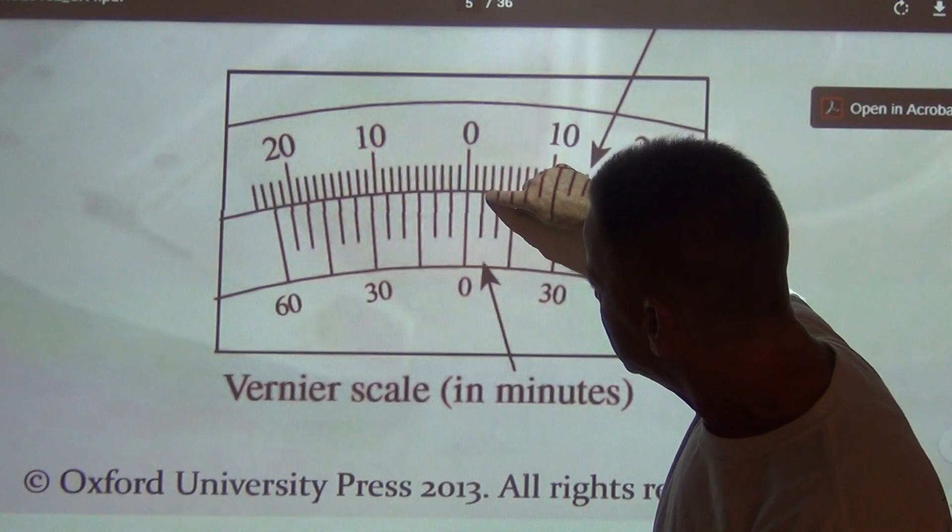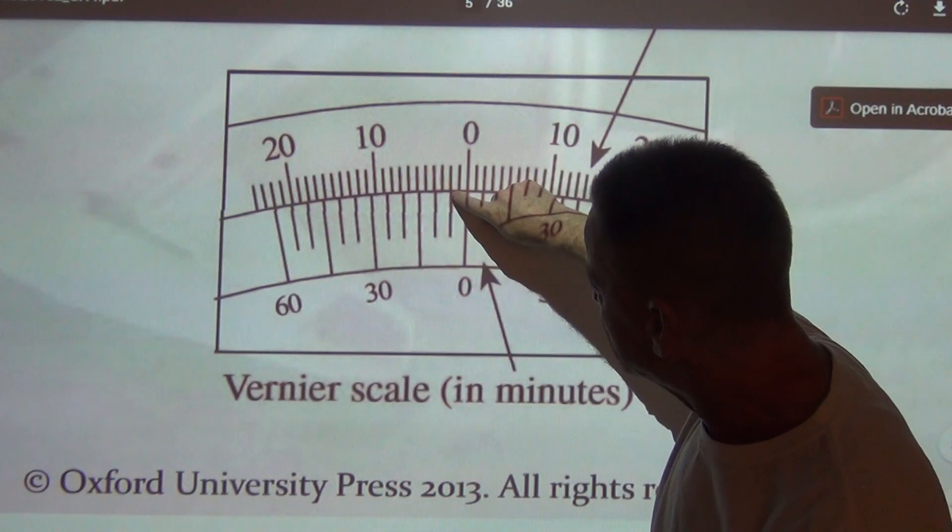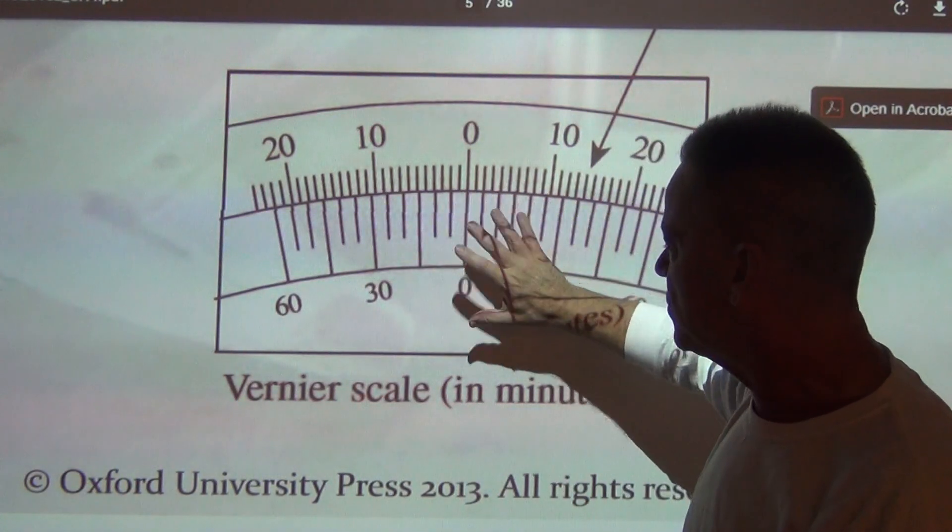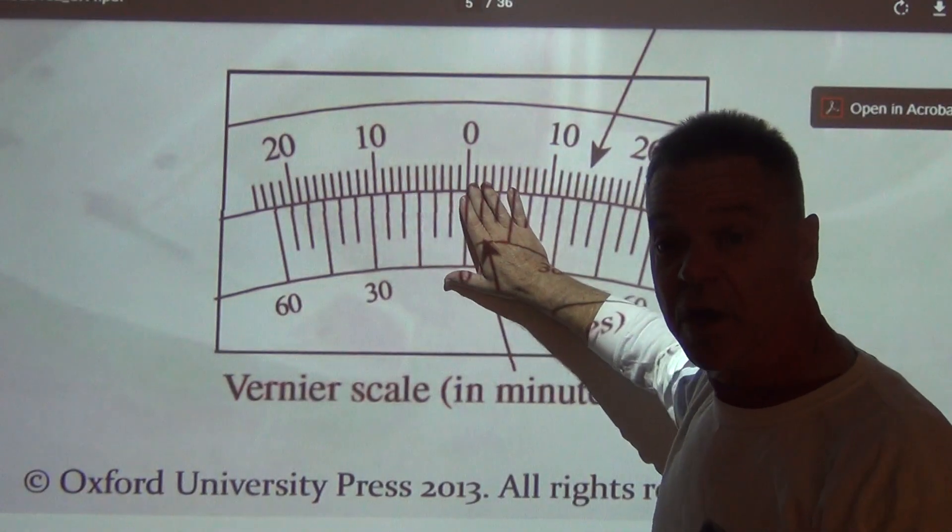you can see this line's a little to the left of the main scale line. This one's a little bit to the right of it, and so on. So this is centered pretty well.